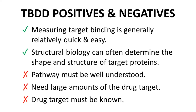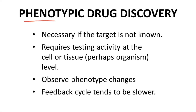The answer is yes. In a phenotypic program, sometimes called a phenotype-based program, the target does not need to be known. Instead of measuring on-target activity or binding, you need to observe a downstream response at a cell, tissue, or even organism level as a phenotypic change. Phenotype changes include almost anything like gene expression levels, muscle contraction, or appearance changes. Testing a molecule for phenotype changes tends to be slower than measuring target binding, but does provide an alternative to target-based discovery.